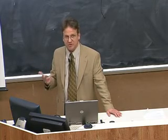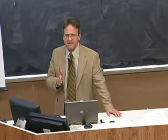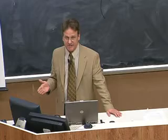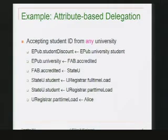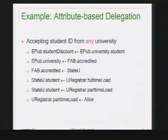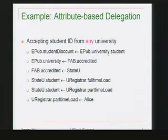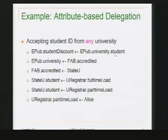Does a mechanic school or a beautician school qualify? The authorities on what's a real university are accrediting boards. So in the second credential, EPUB delegates to FAB, a fictitious accrediting board, saying that anybody that's FAB-accredited is considered to be a university by EPUB. Since State U has a credential saying it's accredited, EPUB.university can include entities like State U. So if Alice shows using credentials that she is a State U student, she would be entitled to the student discount.